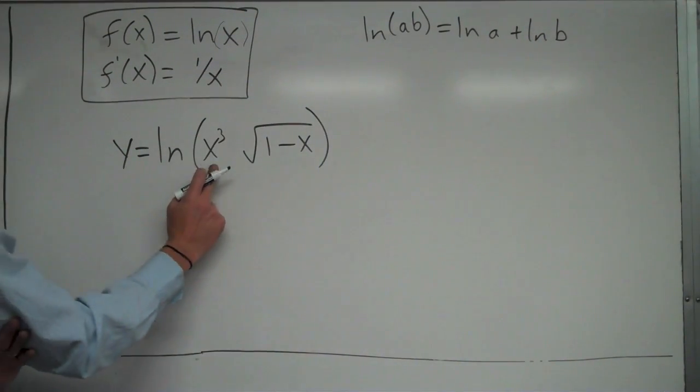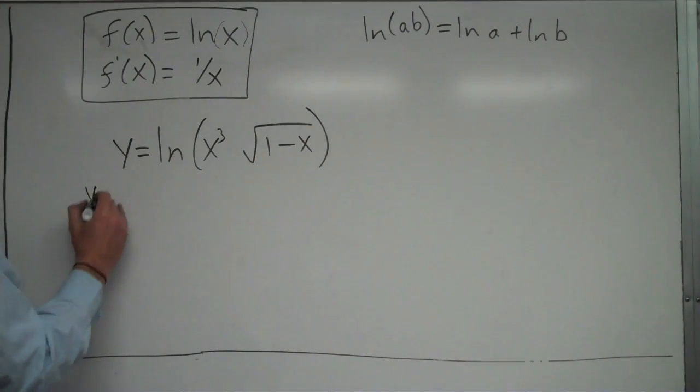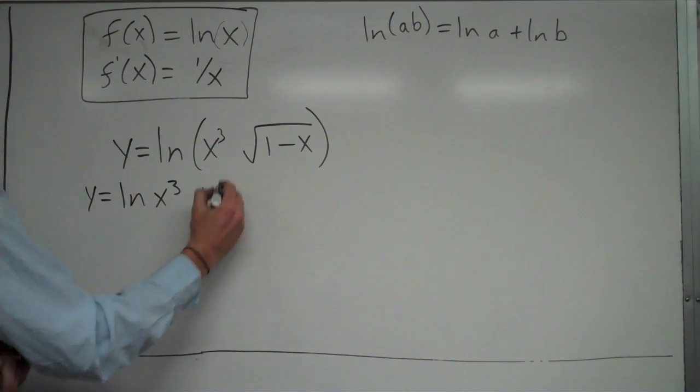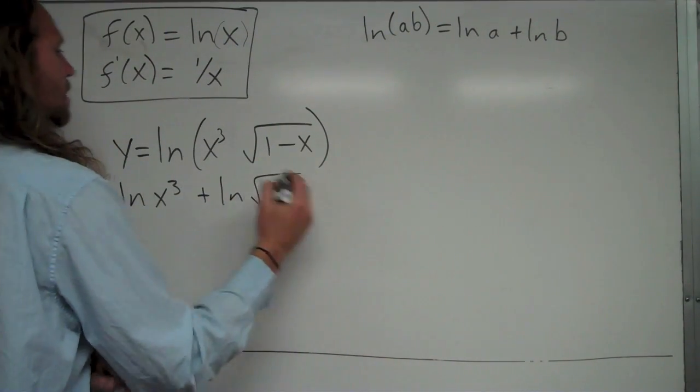So in here, the x cubed is like the a, and this whole square root thing is like the b. So I could expand this as natural log of x cubed plus natural log square root of 1 minus x. Okay?